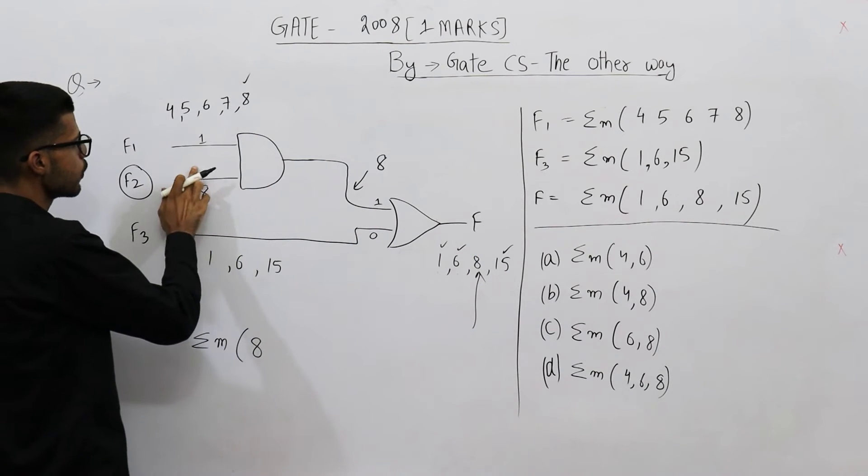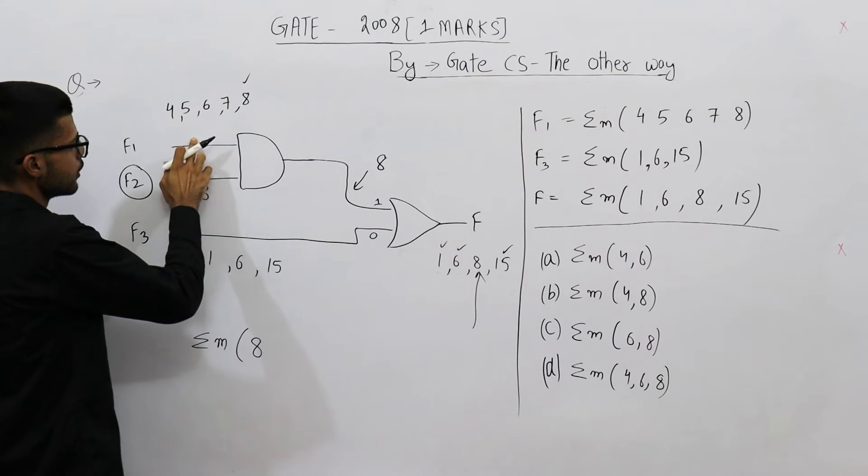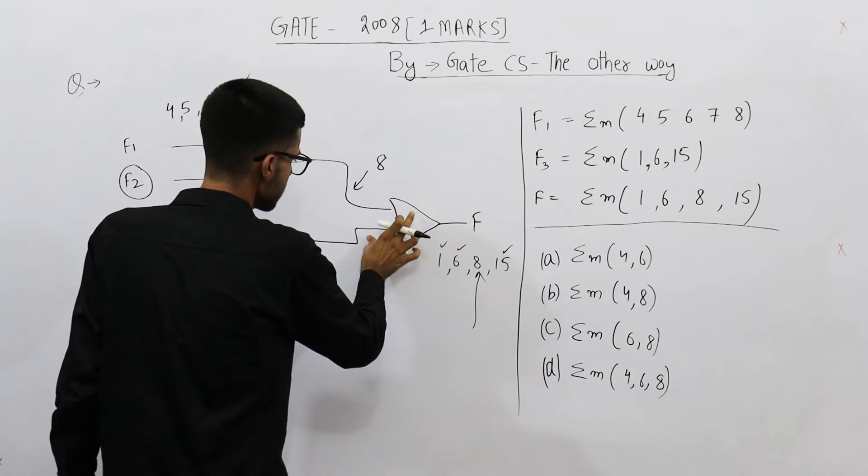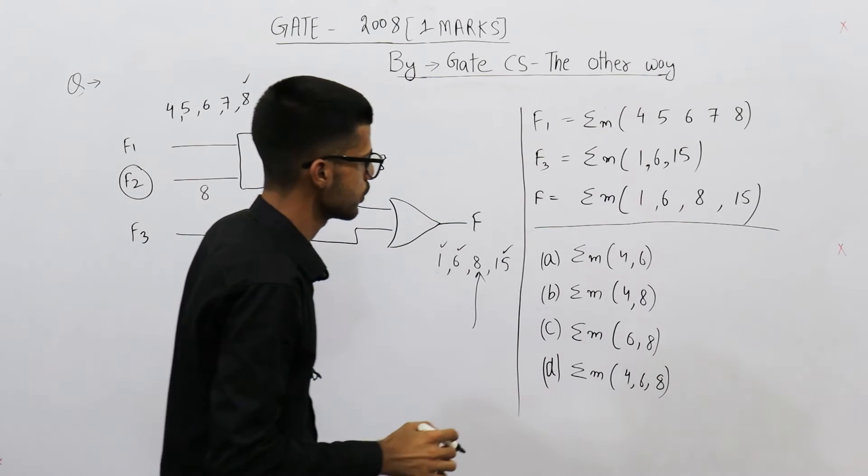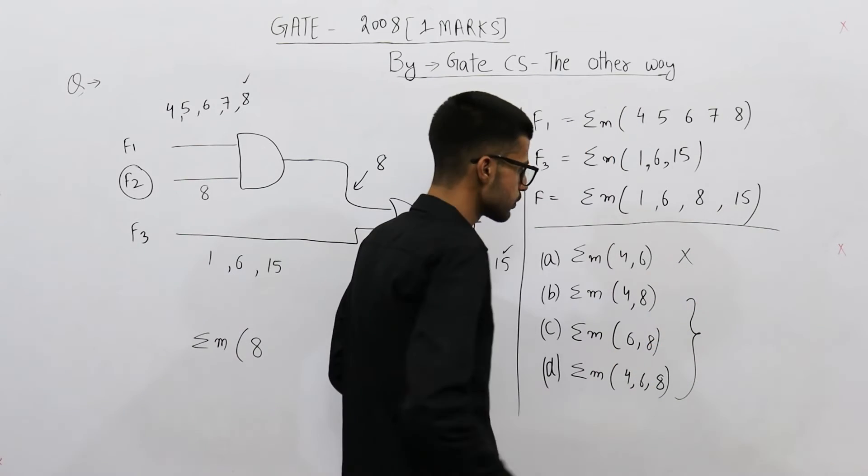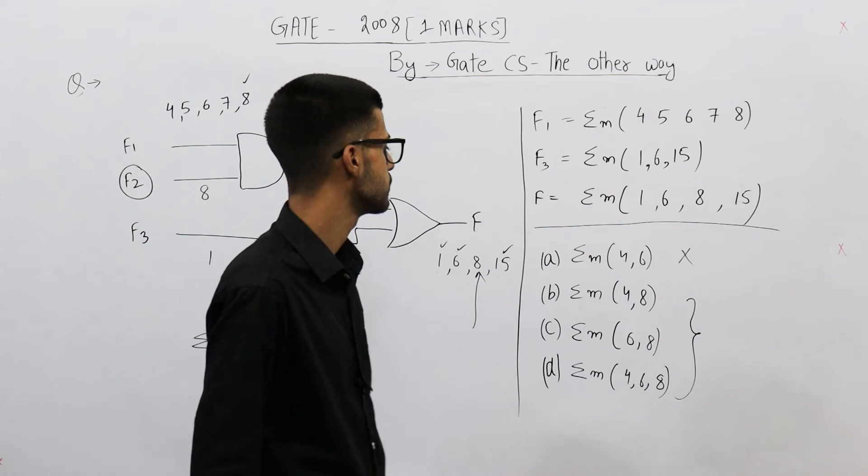Now let's find out what is the answer to this question. We have determined that f2 will at least contain 8. So option A can be rejected. All of these three contain 8, so any one could be possible.